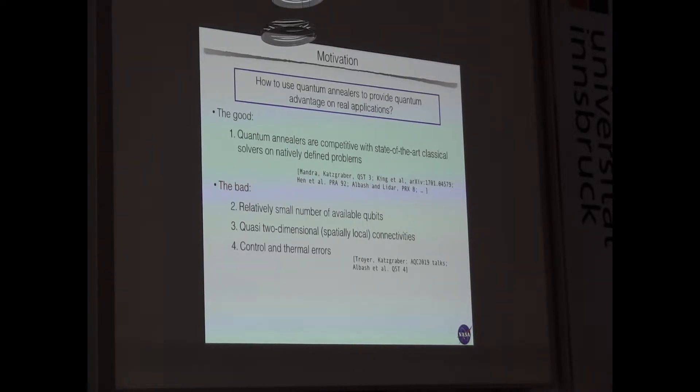Also touched a bit upon by Daniel with a touch of hope. We have some problems here, of course. Relatively small number of qubits, quasi-two-dimensional or especially local connectivities, controlling thermal errors. So it seems that the embedding problem, for example, alone causes an exponential overhead when you try to solve optimization problems.